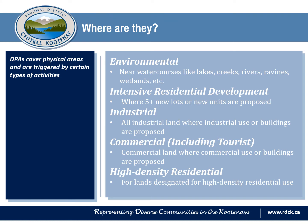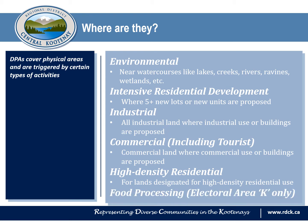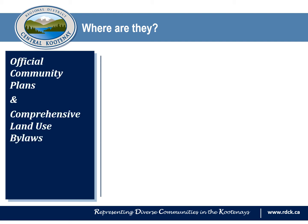Land designated for high density residential use may also require a development permit. Finally, the last type of development permit area that may apply in the regional district is for farm-related activities that involve food processing facilities in electoral area K. Not every area has the same DPAs, and in some electoral areas of the regional district there aren't any DPAs at all.